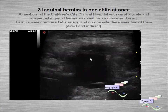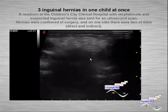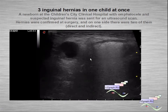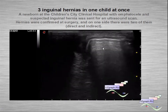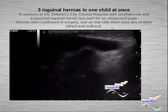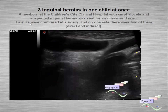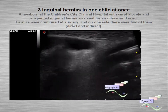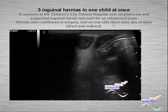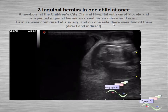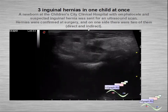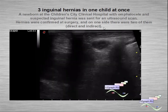A case of three inguinal hernias in the same child — we can see them: one, two, three — which was confirmed at surgery; on one side there were two of them, one direct and one indirect.